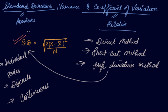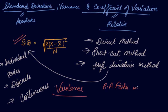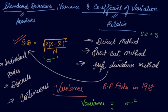After finding standard deviation, if asked to calculate variance, note that variance is another measure of dispersion. The term variance was first used by R.A. Fisher in 1918. Variance is simply the square of the standard deviation, denoted by sigma squared. For example, if your standard deviation is 3, your variance will be 3 squared, which is 9.